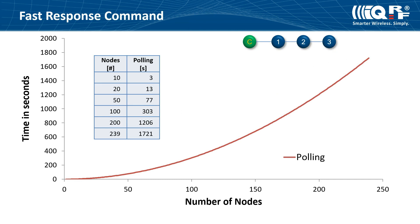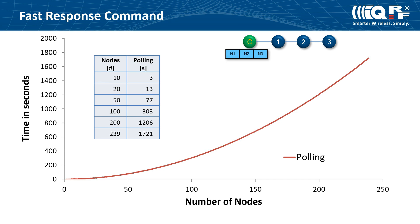Fast response command is a process allowing to quickly collect small data from multiple nodes in the network. It fits best for applications where the same type of information should be collected from each node. For example, in street lighting it's possible to switch all lamps on by a single packet and then immediately collect status information from each lamp. It's much faster than polling individual nodes one by one using unicast packets, because the time of polling grows exponentially based on the number of nodes you need to read data from. In this time period the network cannot be used for anything else, so this could dramatically limit real usability of your network. That's why we've developed the patented fast response command.